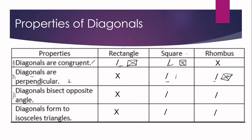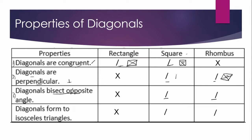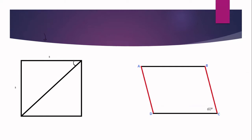Number three: in a square and a rhombus, the diagonals bisect opposite angles, meaning each angle is divided into two equal parts. For a square, the angles are 90 degrees, so the diagonal divides 90 degrees into two equal parts, giving us 45 degrees and 45 degrees. Opposite angles are also bisected the same way — this is 45 degrees and this one is also 45 degrees. Each diagonal bisects opposite angles.